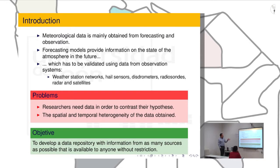First of all, I want to talk about meteorological data itself. It has two sources, mainly. It comes from forecasting models or observation systems. With forecasting models we have information about the atmosphere in the future.